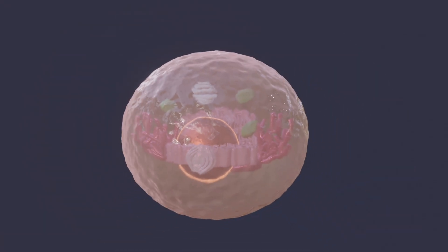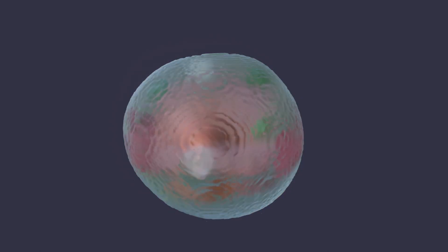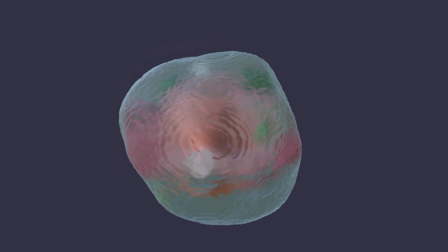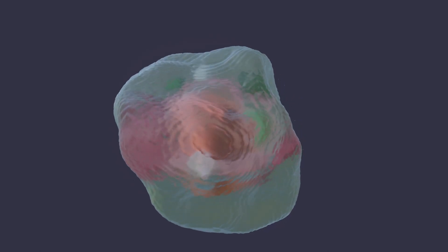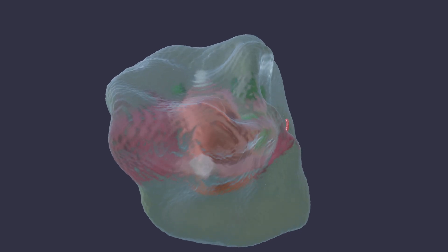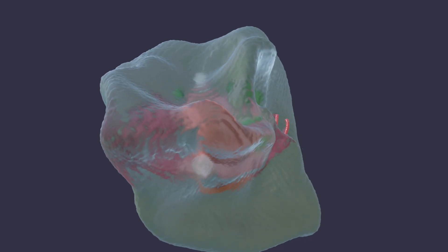If we remove the cell membrane, we can clearly see the liquid component of the cytoplasm, the cytosol. This gel-like substance surrounds the cell organelles and consists mainly of water. Other components are proteins, lipids, and ions.